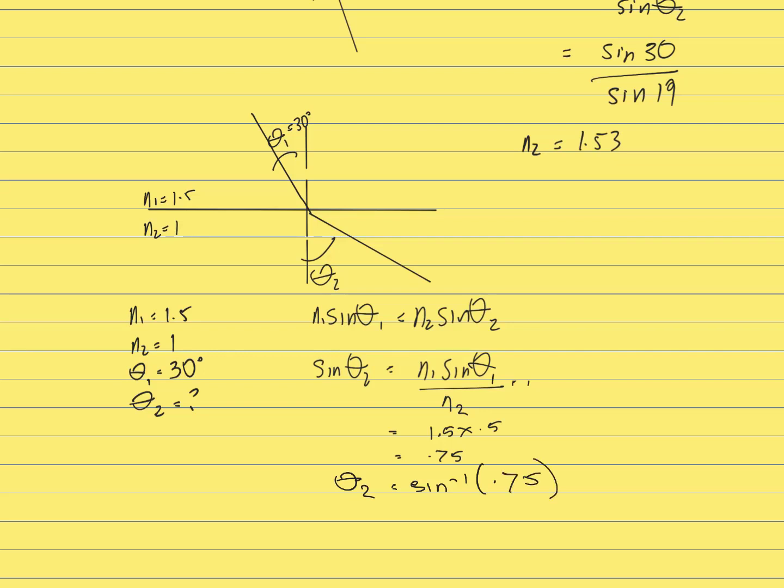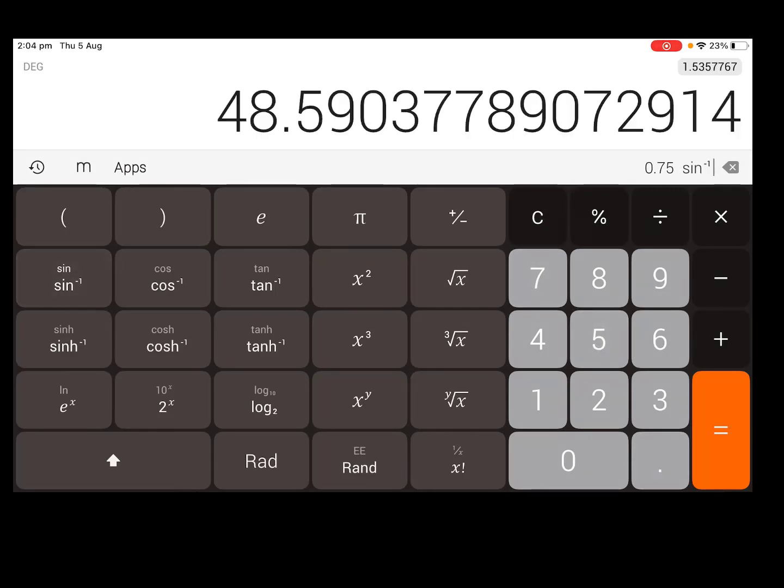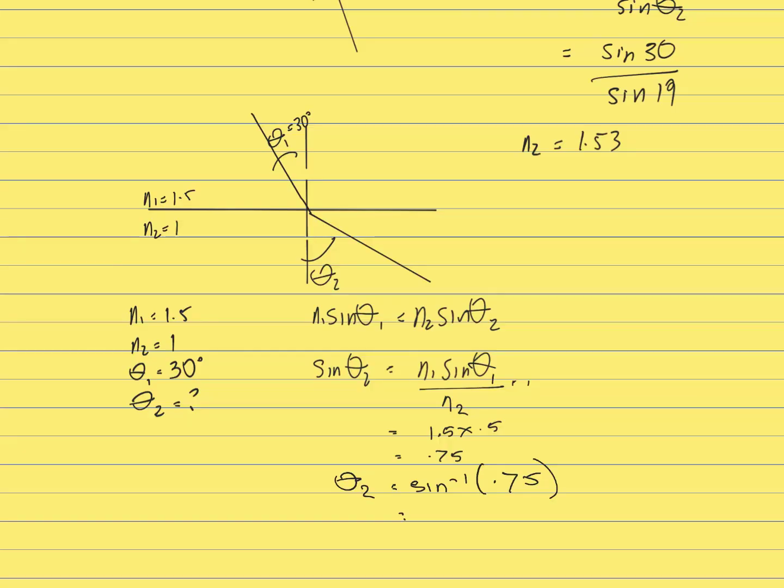So let's go to a calculator and work that out. 0.75 inverse sine. And that is what we're after. So that was 48.6 degrees.